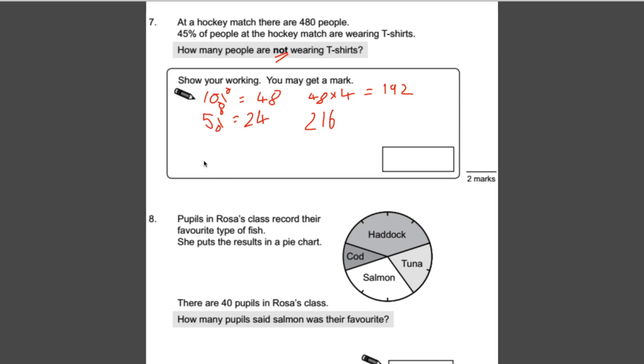Now that's not the answer—that's how many people are wearing t-shirts. What we need to do is work out how many are not. If 216 are wearing t-shirts, then everybody else isn't. We need to do 480 subtract 216, and that gives us 264. Make sure when you do questions like this that you show your working. Even if you get the answer wrong, if you've done the correct calculation, they may still give you that mark.